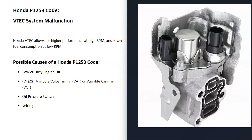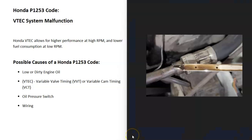What are some possible causes of a Honda P1253 code? The first thing is going to be low or dirty engine oil, so be sure to check that. Oil is running through the VTEC system, so if the oil is low or if it becomes really dirty, it can affect it. First thing, be sure to check your oil.